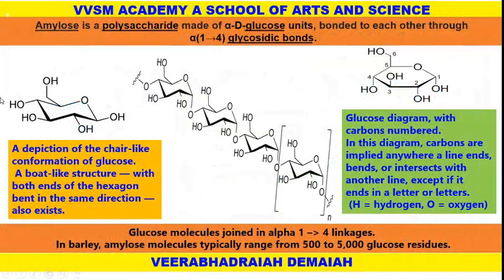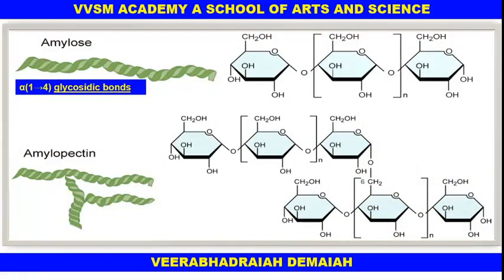This is the helical structure of amylose. A depiction of the chair-like conformation of glucose also exists — a bolt-like structure with both ends of the hexagon bent in the same direction. This is the structure where glucose molecules are joined in alpha-1,4 linkages. Amylose molecules typically range from 500 to 5,000 glucose residues. The glucose diagram shows carbons numbered 1 to 6, with hydrogen, oxygen, and carbon atoms indicated.